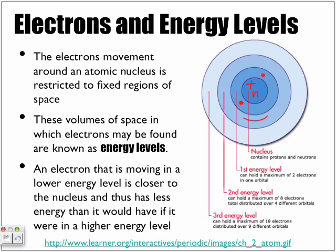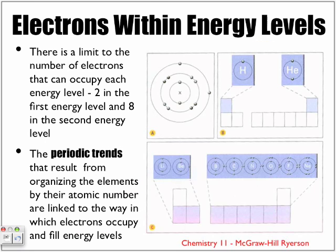So electrons within energy levels. There is a limit to the number of electrons that can occupy each energy level. As we said, two in the first energy level, eight in the next, eight in the third. Now, the periodic trends that result from organizing the elements by their atomic number are linked to the way in which electrons occupy and fill energy levels. So if we look at hydrogen and helium in the diagram, notice we have electrons that are found on their first energy level. Now, if we move to period number two, we have two energy levels. And they are listed by the following. So we have lithium, beryllium, boron, carbon. So we are looking at period number two and all of them contain two energy levels. And the electrons don't circle around in that fixed outer ring. It's pretty much, we show it this way to simplify the diagram, make the diagram a little more understandable.